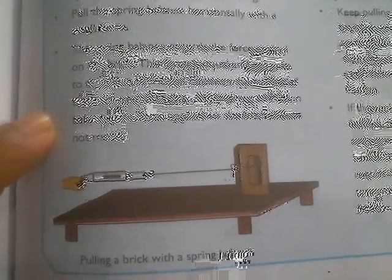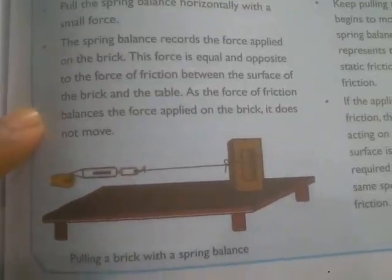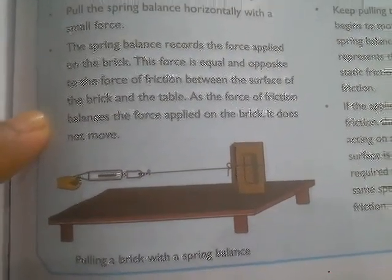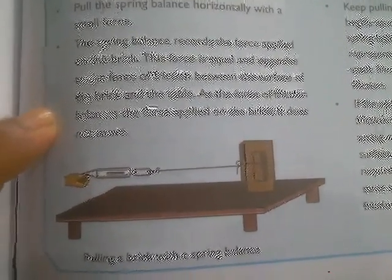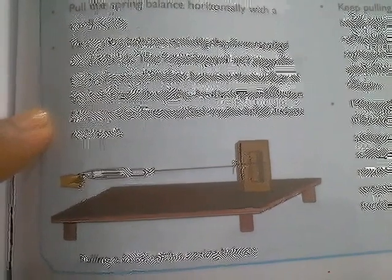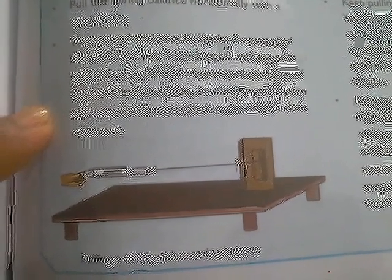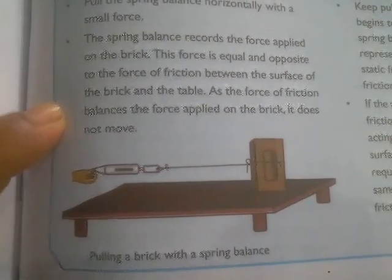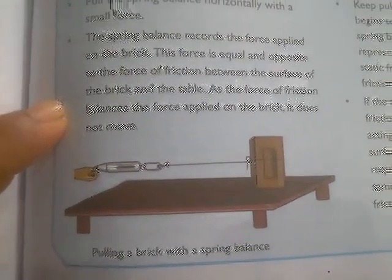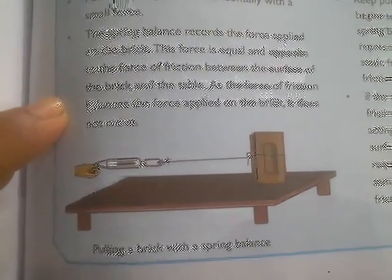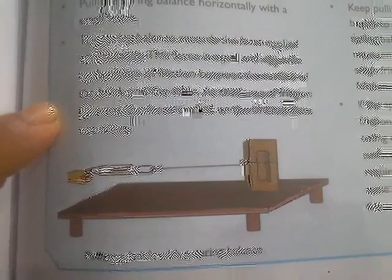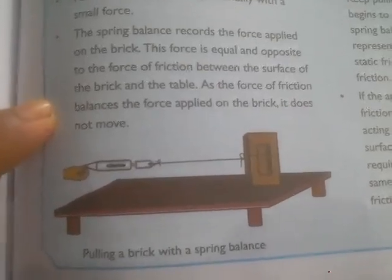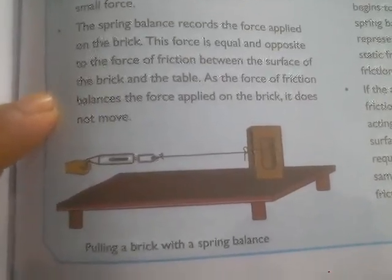The friction exists between the brick and the cardboard. When both the brick and cardboard are at rest, this kind of friction is known as static friction. The brick is not moving, meaning the irregular surfaces are interlocked — this is static friction.